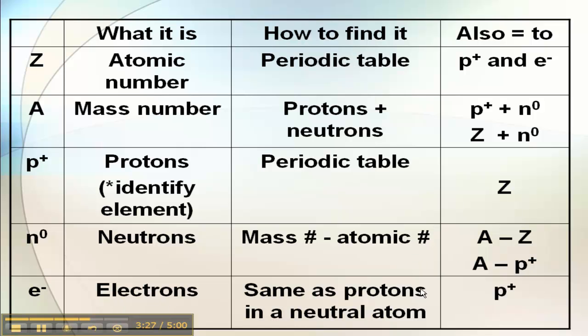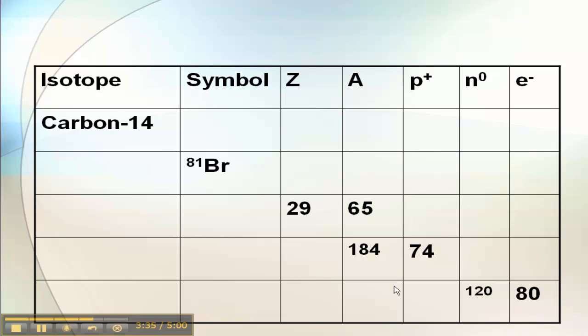And then E is our electrons, and for now we're going to be talking about neutral atoms, so it's the same as our protons. And we're going to learn how to fill in this chart using all of those equations. And that will be our next video. I'll see you next time.